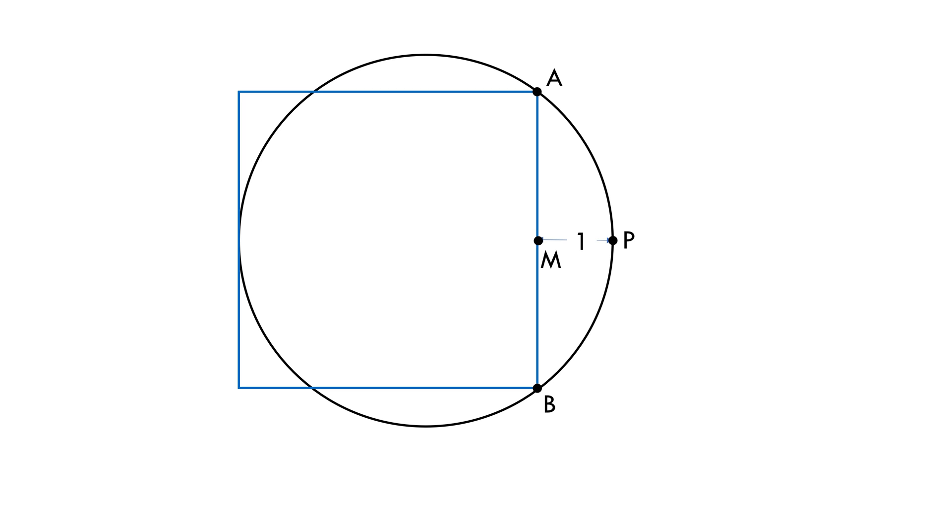First of all, let's assume this is the center of the circle. Let's join O and A so that OA is the radius of the circle. Let's now drop OM perpendicular to line AB. Because OP is the radius of the circle and MP is given to be 1 unit, OM will be equal to R minus 1.